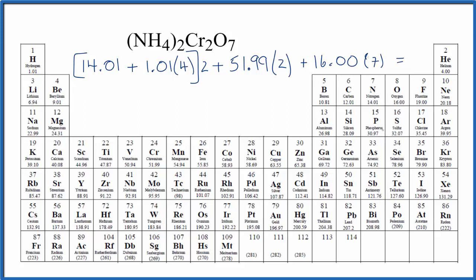So now we just need to do the math. We'll take 1.01, multiply that by four, and add it to 14.01. That gives us 18.05, and then we're going to double that. So we have 36.10, and then we add 51.99 times two, and then 16 times seven.